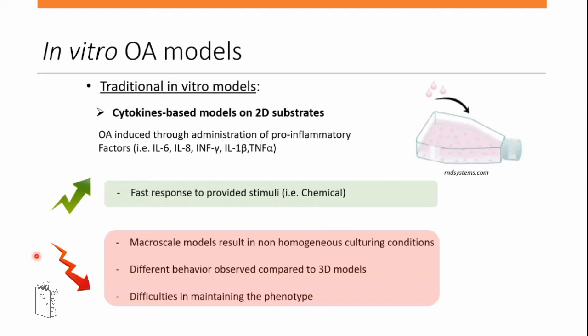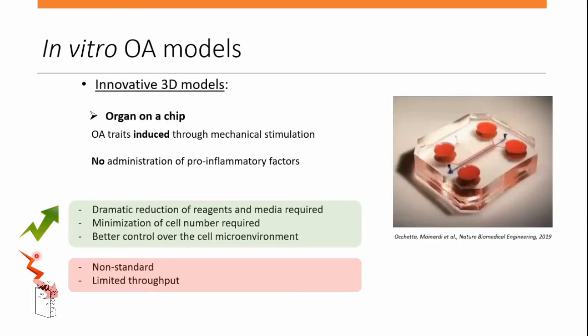Regarding in vitro osteoarthritis models, traditional ones are based on 2D substrates with osteoarthritis induced through the administration of pro-inflammatory factors. They offer fast response, but have significant criticalities — they operate at macro scale, resulting in non-homogeneous culturing conditions, and show different cell behavior compared to 3D models.